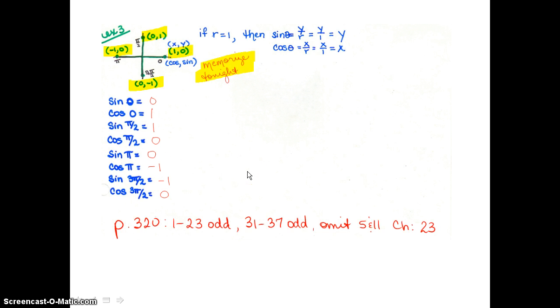Here's the homework for tonight. On page 320, do problems 1 through 23 odd and 31 through 37 odd. Omit numbers 5 and 11. For your challenge problem, do number 23.